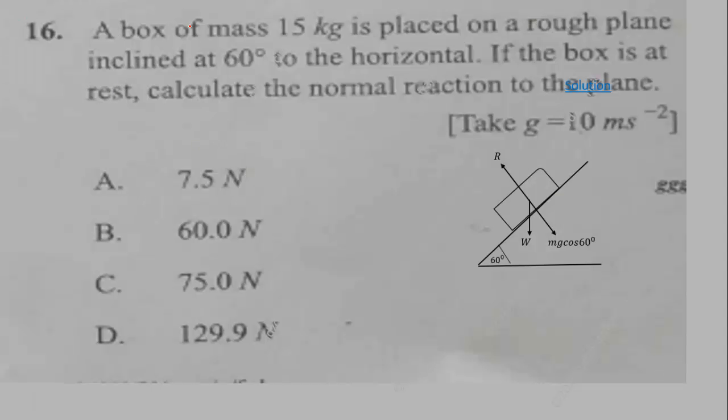Question 16: A box of mass 15 kg is placed on a rough plane inclined at 60 degrees to the horizontal. If the box is at rest, calculate the normal reaction to the plane. We're given the gravity due to acceleration to be 10 meters per second squared. Now, the normal reaction is equal to the vertical component downward of the weight when we resolve it, so mg cos 60 degrees, which is the angle given over here. This is a diagram representing the problem.